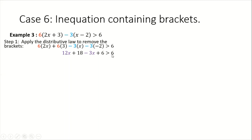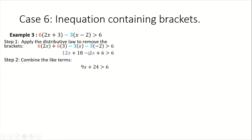At this stage, on the left-hand side we have like terms — x terms, color-coded here in purple, and constant terms. We can combine those terms to give one single term each. When we combine 12x minus 3x, that gives us 9x. And when we combine 18 plus 6, that gives us 24. So now we have 9x plus 24 greater than 6.